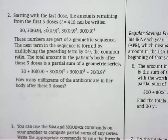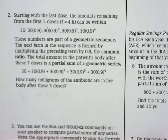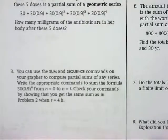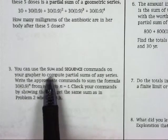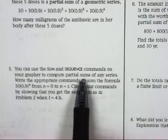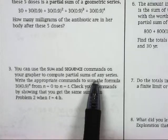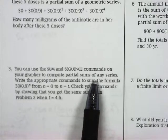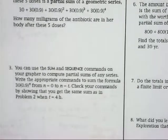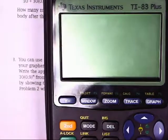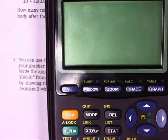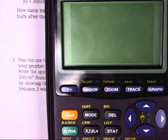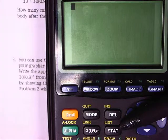Question 3 says you can use the Sum and Sequence Commands on your grapher or calculator to compute these partial sums of any series. I want to quickly talk to you about how to do that in the calculator. Where you find those things is actually in the List command on your calculator, which we pretty rarely use, but it's right under your Stat or in the second button for your Stat button.